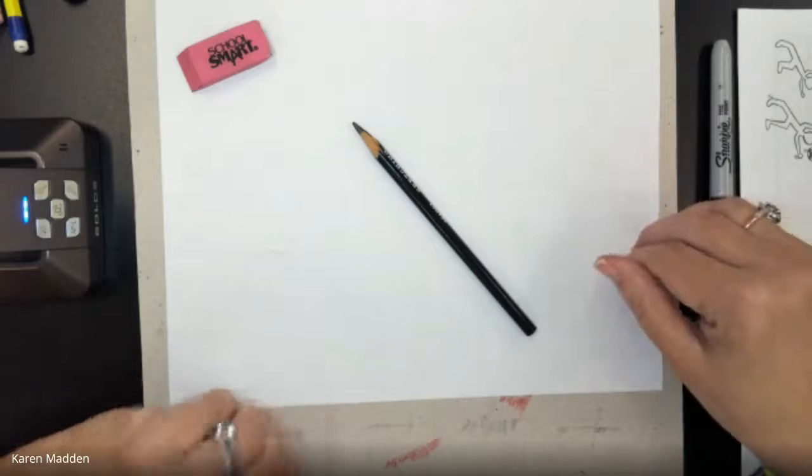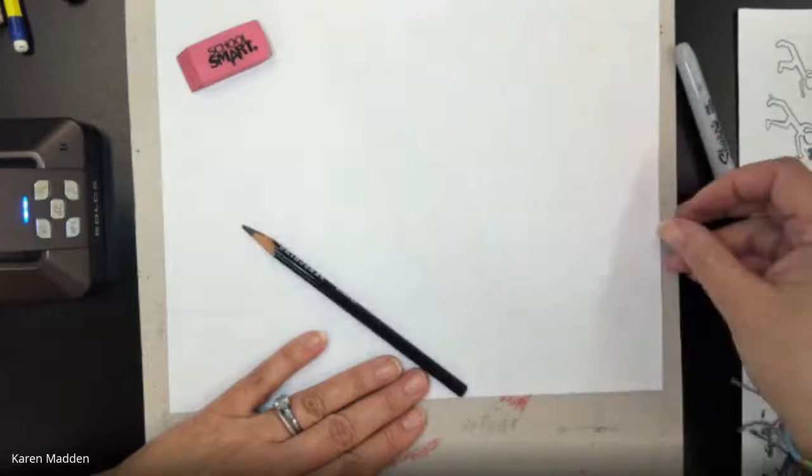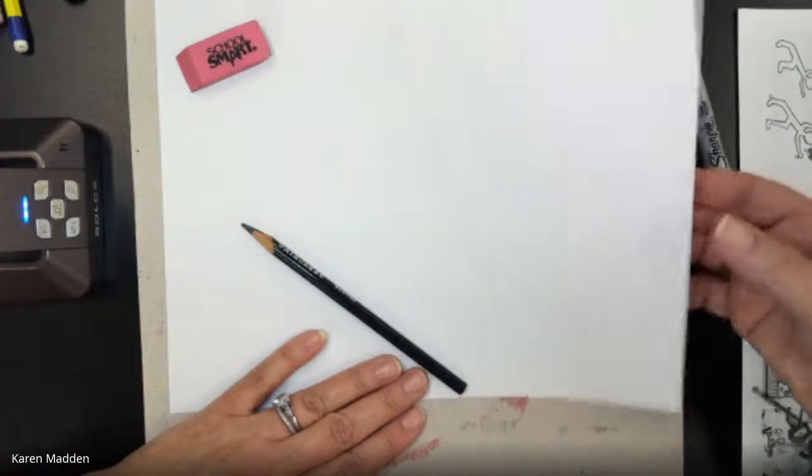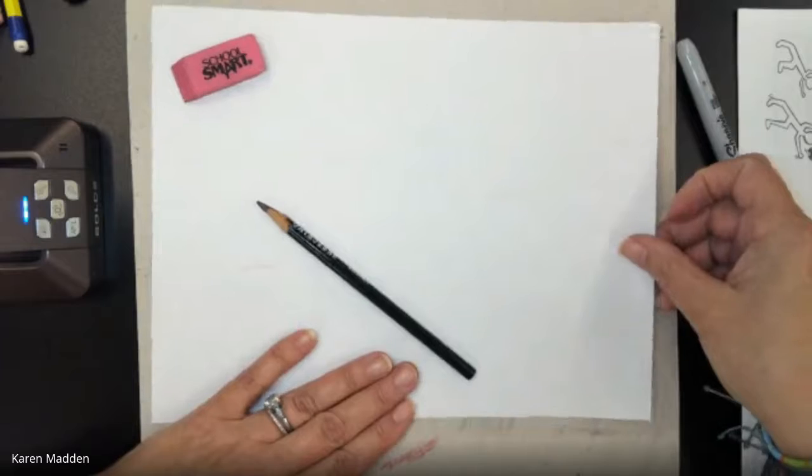So this project is going to be a very quick and simple how-to: draw figures that look like Keith Haring inspired figures of people.